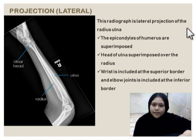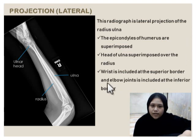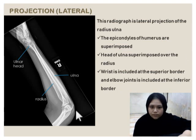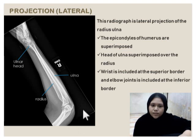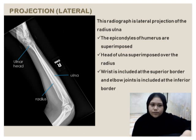For lateral, this radiograph is lateral projection of Radius Ulna. I see so because the epicondyles of humerus are superimposed, which is this one. Head of Ulna superimposed over the radius. Wrist is included at the superior border, and elbow joint is included at the inferior border.